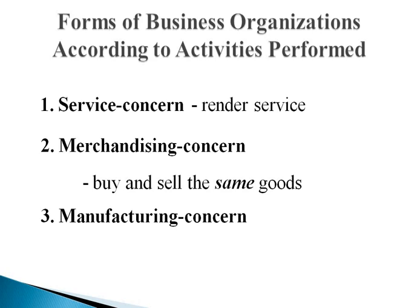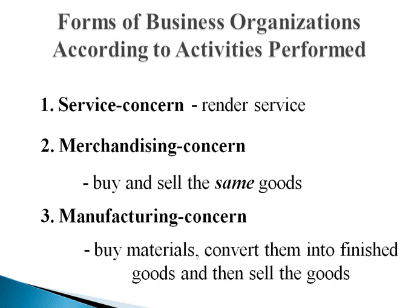Manufacturing companies, on the other hand, buy raw materials, convert or use those raw materials to form finished products, and then sell the finished products. A furniture making business, for instance, buys raw materials like wood, nails, paint, and varnish, then converts those materials to form tables, chairs, or cabinets. Only after conversion does the company sell the finished products.